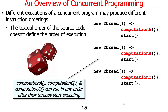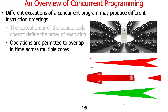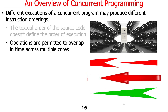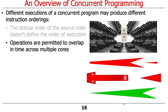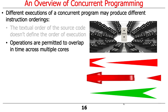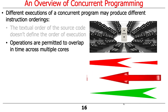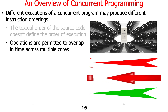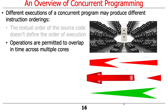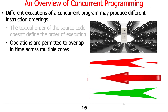In particular, the textual order of the source code no longer necessarily defines the execution order. For example, if we spawn three threads with computations A, B, and C, those computations can actually run in any order after the threads start. Moreover, operations are permitted to overlap in time across multiple cores. As you might imagine, this is both a blessing and a curse: a blessing because programs may run faster with more things happening simultaneously, and a curse if you have conflicts, hazards, race conditions, or visibility issues between operations running on different cores.